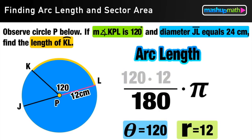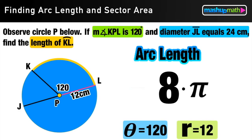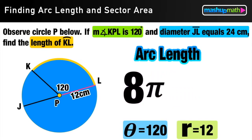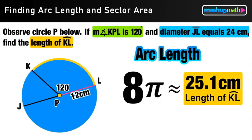So 120 times 12 equals 1440. And 1440 divided by 180 equals 8. Now in terms of pi, that arc length is just 8 pi. We can evaluate 8 pi to approximately 25.1 centimeters. That is the curved length of arc KL.